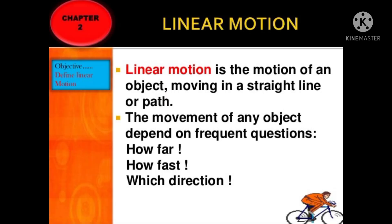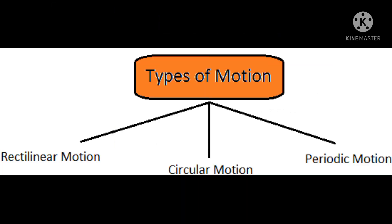Coming to rectilinear motion, the other name of rectilinear motion is linear motion. Linear motion means it is a kind of motion which moves in a straight line or a straight path. The movement of any object depends upon questions like how far, how fast, and which direction.